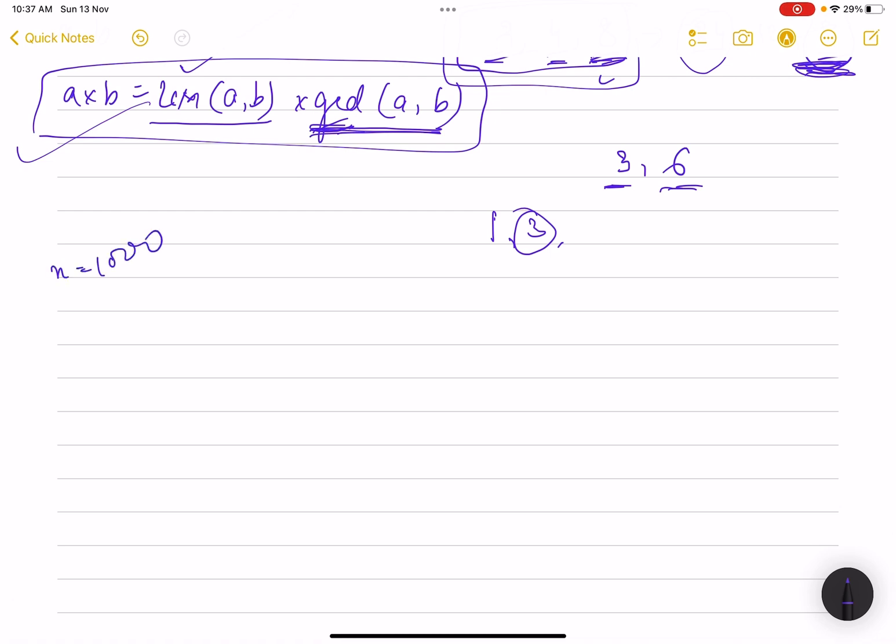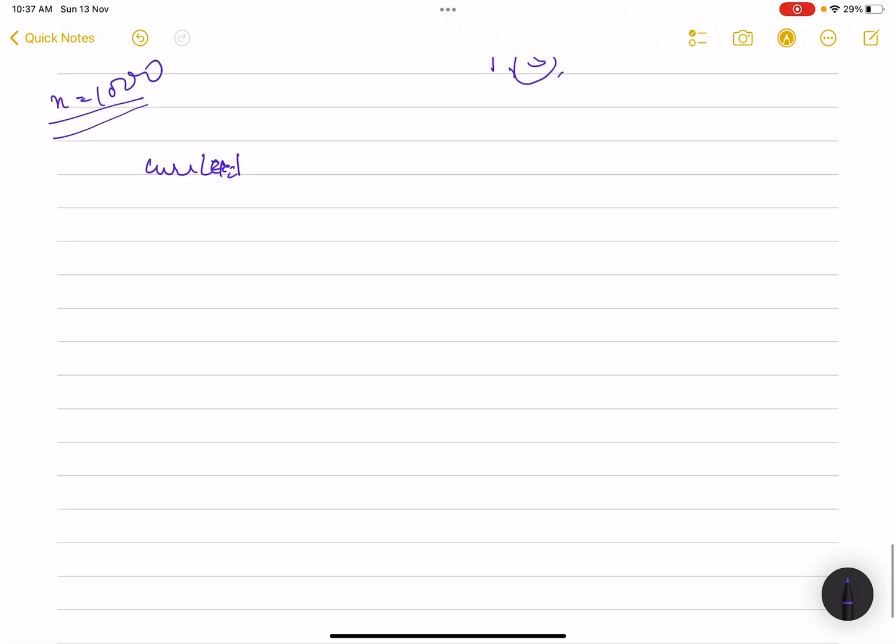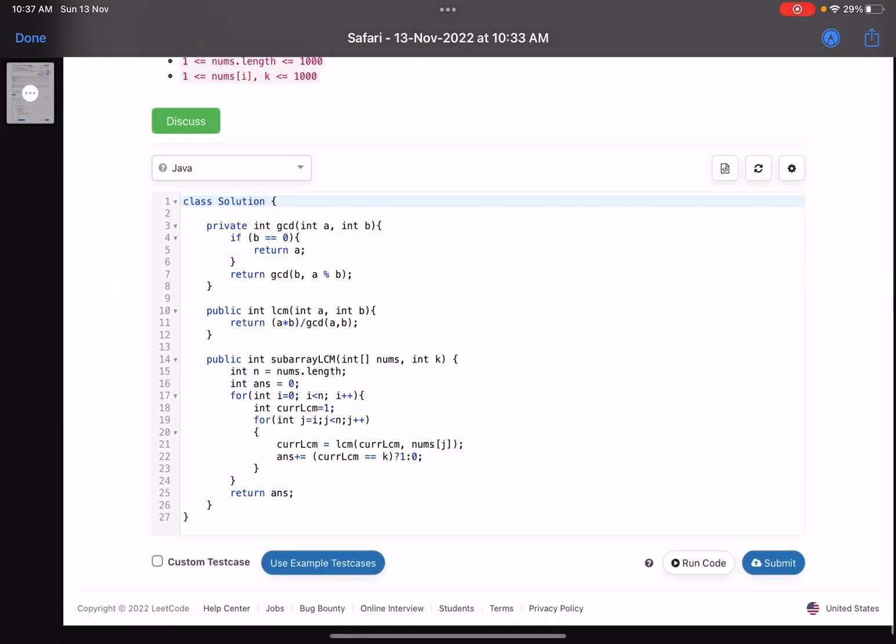The number of elements we can have is 1000, so let's run an O(n²) loop. Initialize your current LCM with 1, then keep considering each and every subarray. Let me show you the code - that will make it clearer.